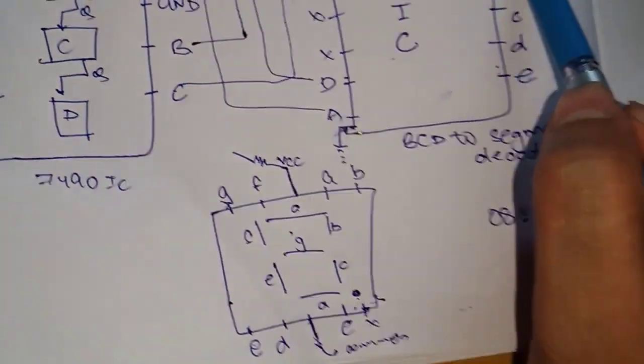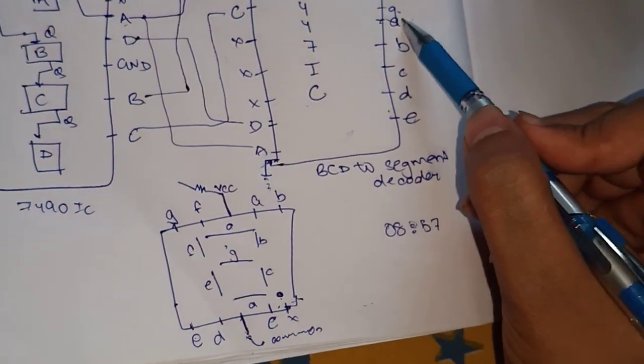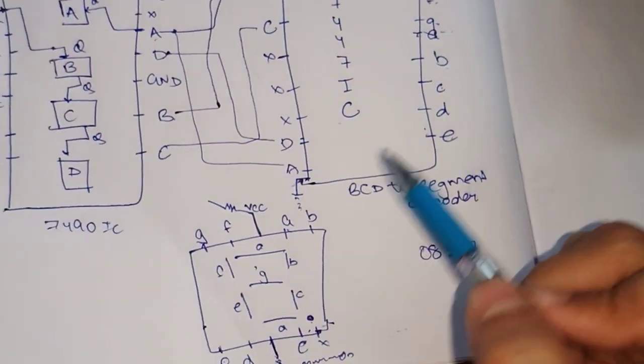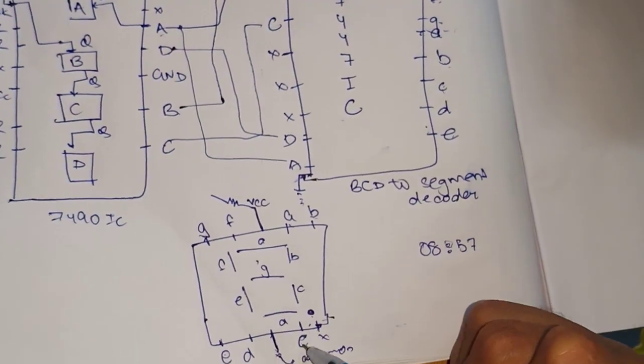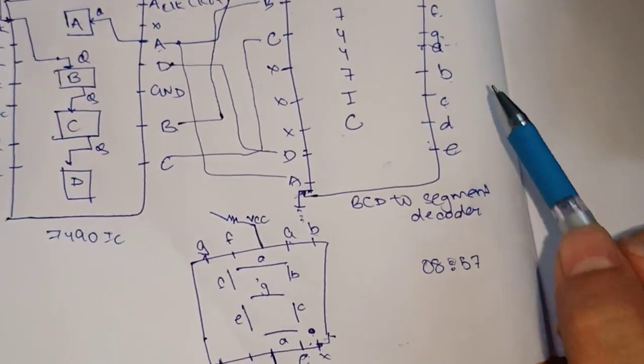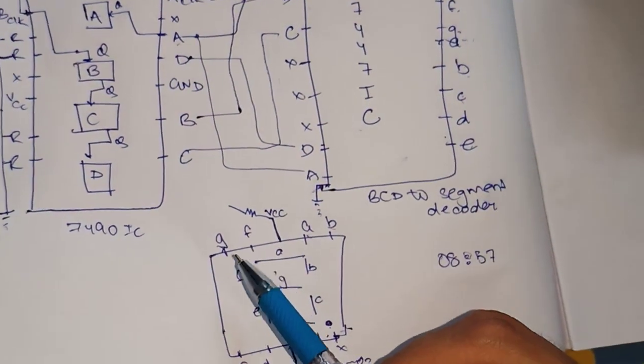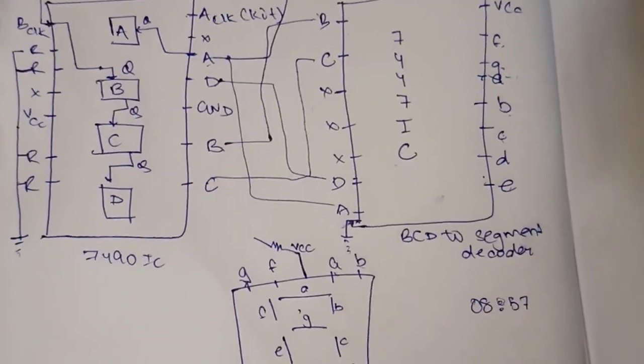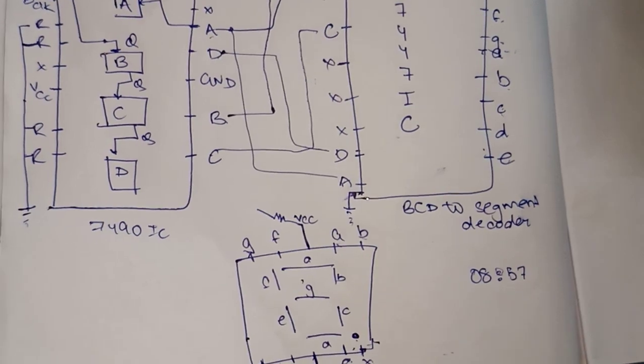Just after this, just connect this A to A, B to B, C to C, D to D, E to E, F to F, G to G, and your decade counter will work perfectly.